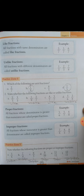Practice Zone 5 ke andar aapko batana hai: state whether the following fractions are proper or improper fractions. Proper aur improper fraction represent karna hai. Proper fraction kya hota hai? All fractions whose denominator is greater than numerator are called proper fractions. Aur improper fraction ke andar numerator ki value greater hoti hai. Ab 5 by 6 — proper. 7 by 4 — improper. 8 by 5 — also improper. 9 by 10 is a proper fraction. 11 by 12 is a proper fraction. 12 by 11 is an improper fraction.